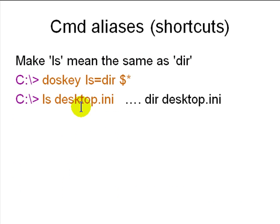Windows has a command called DOSKEY which allows you to create shortcuts for command names. For example: 'DOSKEY ls=dir $*' makes 'ls' a shortcut for the DIR command, where $* passes through any arguments. So 'ls desktop.ini' becomes 'dir desktop.ini'.